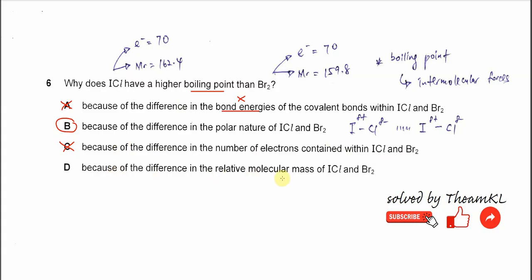For D, because of the difference in the relative molecular mass of ICl and Br₂. The molar mass is quite close: 162.4 and 159.8.